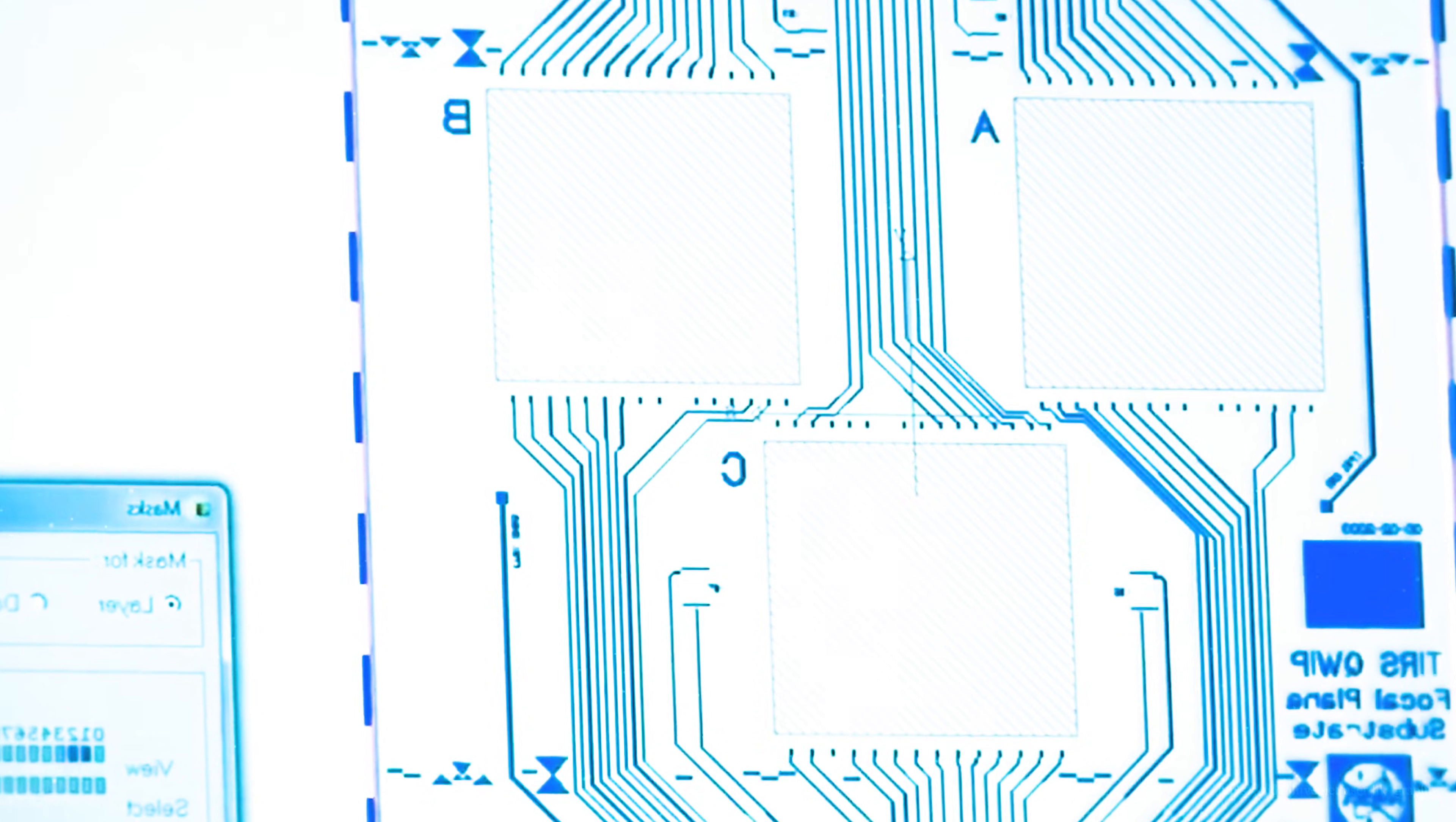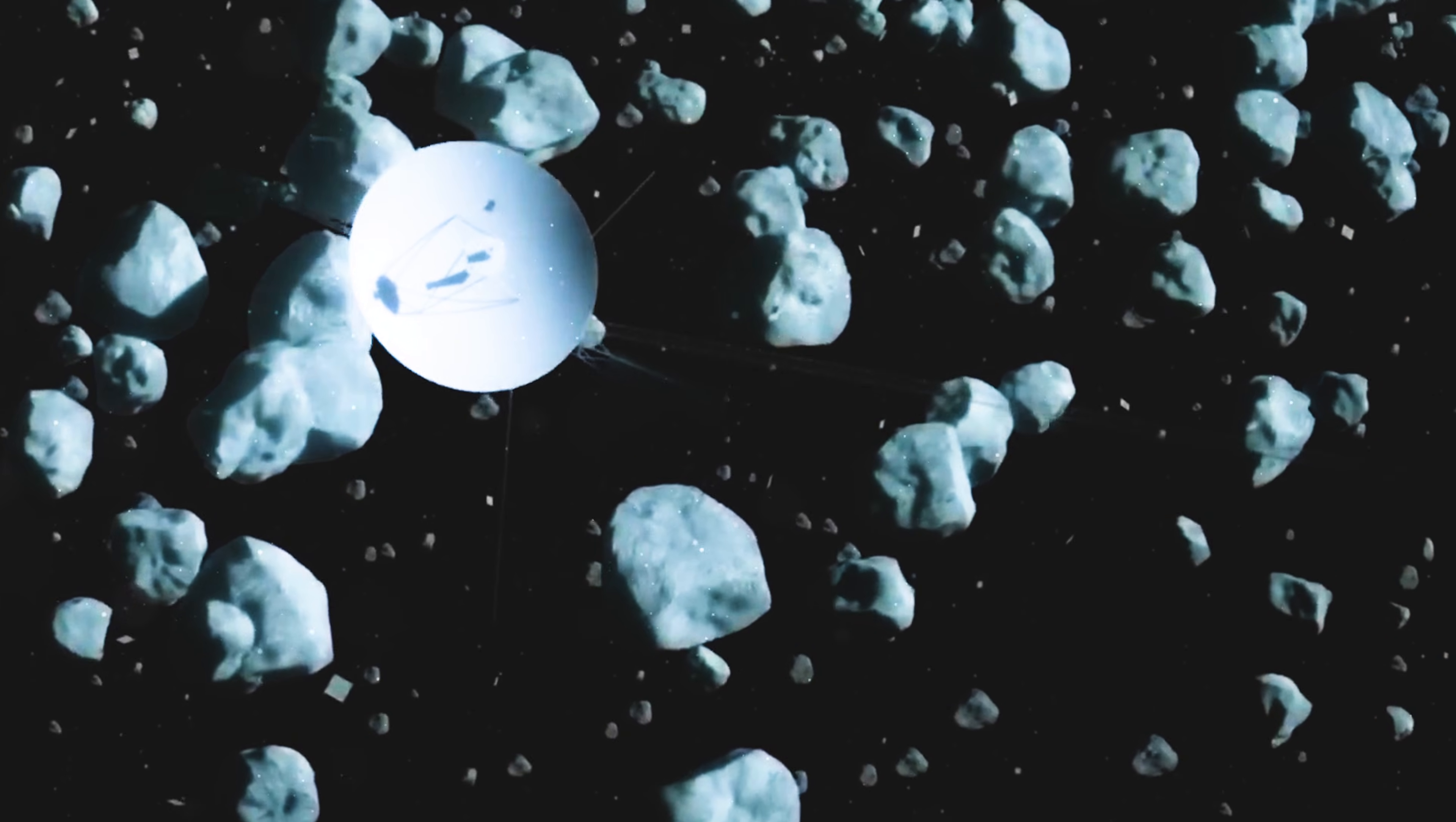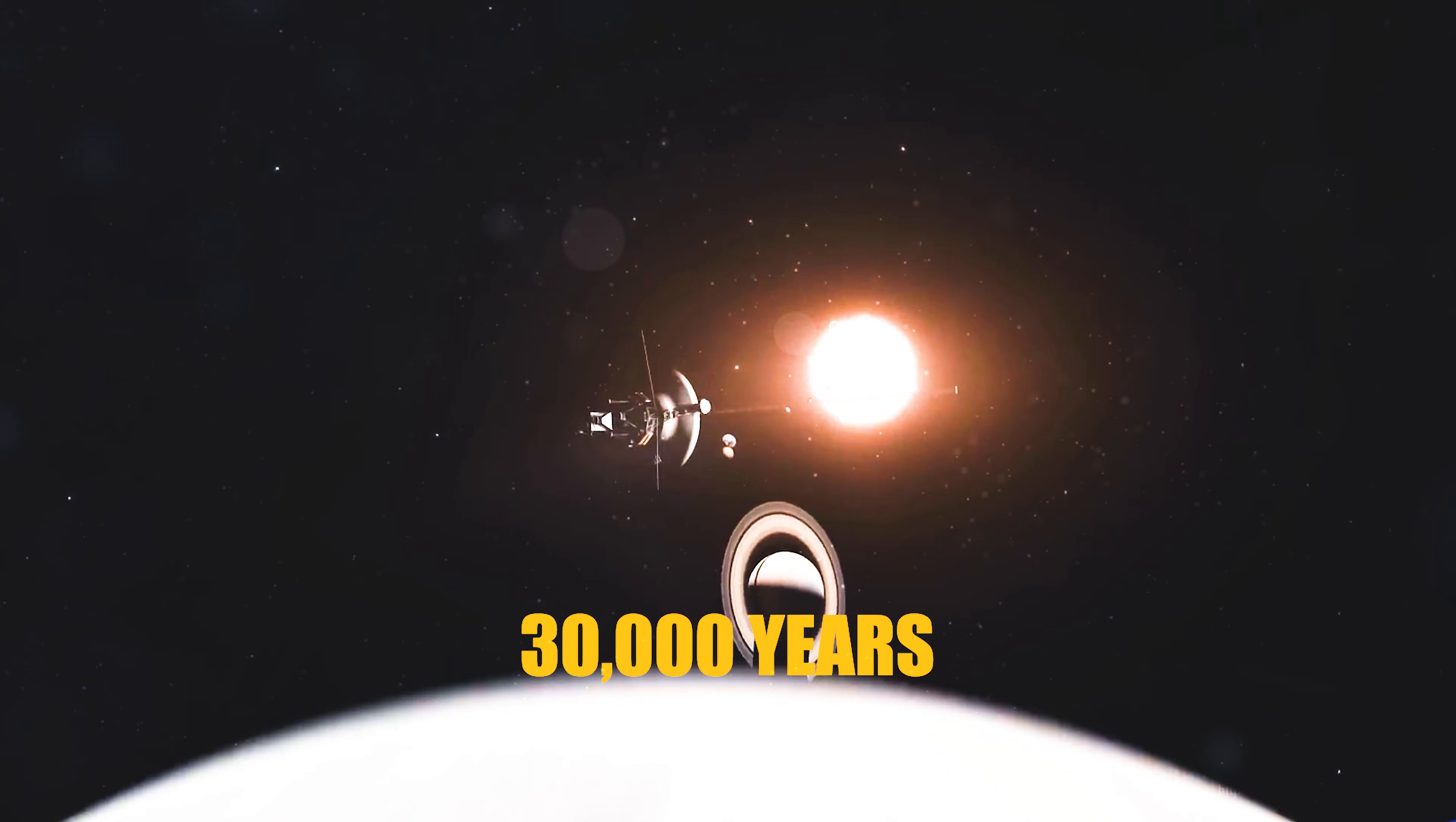Crossing the heliopause didn't mean leaving the solar system. Not really. The sun's gravitational influence extends much farther. Now the Voyagers drift toward the inner Oort cloud, a sparse halo of icy comets they won't reach for centuries. It will take 300 years to reach its inner edge. 30,000 years to exit it.